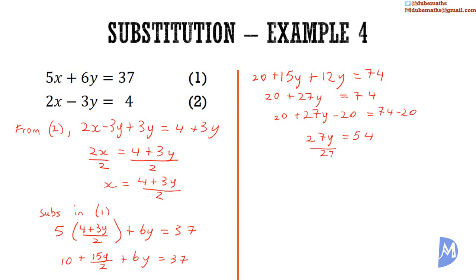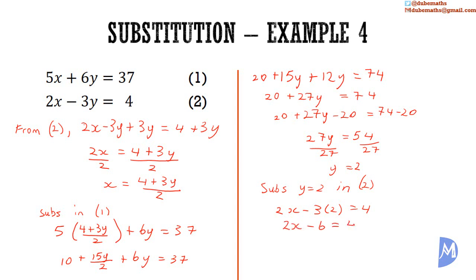Dividing both sides by 27, 54 divided by 27 is 2, so y is equal to 2. We substitute y equals 2 in equation 2: 2x minus 3 multiplied by 2 is equal to 4, giving 2x minus 6 is equal to 4. Adding 6 to both sides, negative 6 plus 6 is equal to 0, and 2x is equal to 10. Dividing both sides by 2, x is equal to 5.